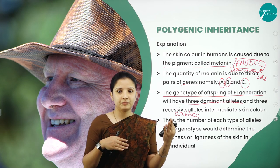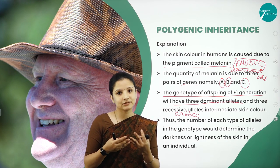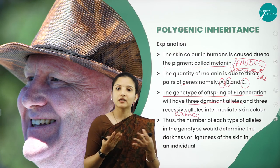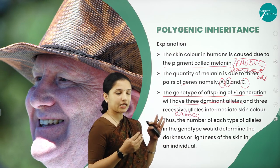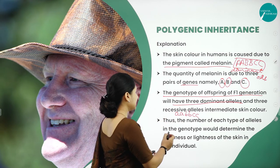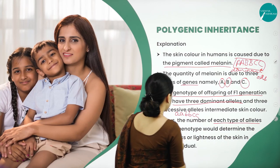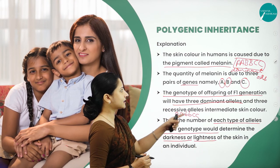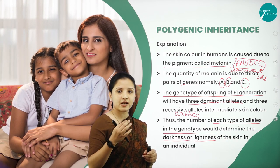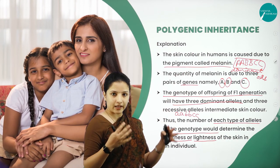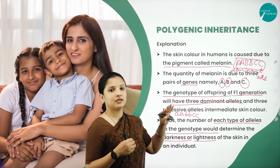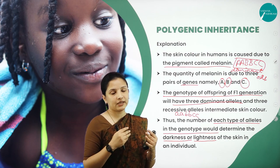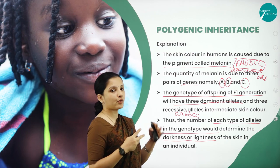If the father is black and the mother is fair, the baby might have a dusky, fair, or black skin color — it cannot be predicted with certainty. The number of each type of allele in the genotype determines the darkness or lightness of the skin. Since three genes are involved — Gene A, Gene B, and Gene C — with dominant alleles AA, BB, CC and recessive alleles aa, bb, cc, the alleles are what determines the intermediate skin color in the progeny. This is polygenic inheritance.